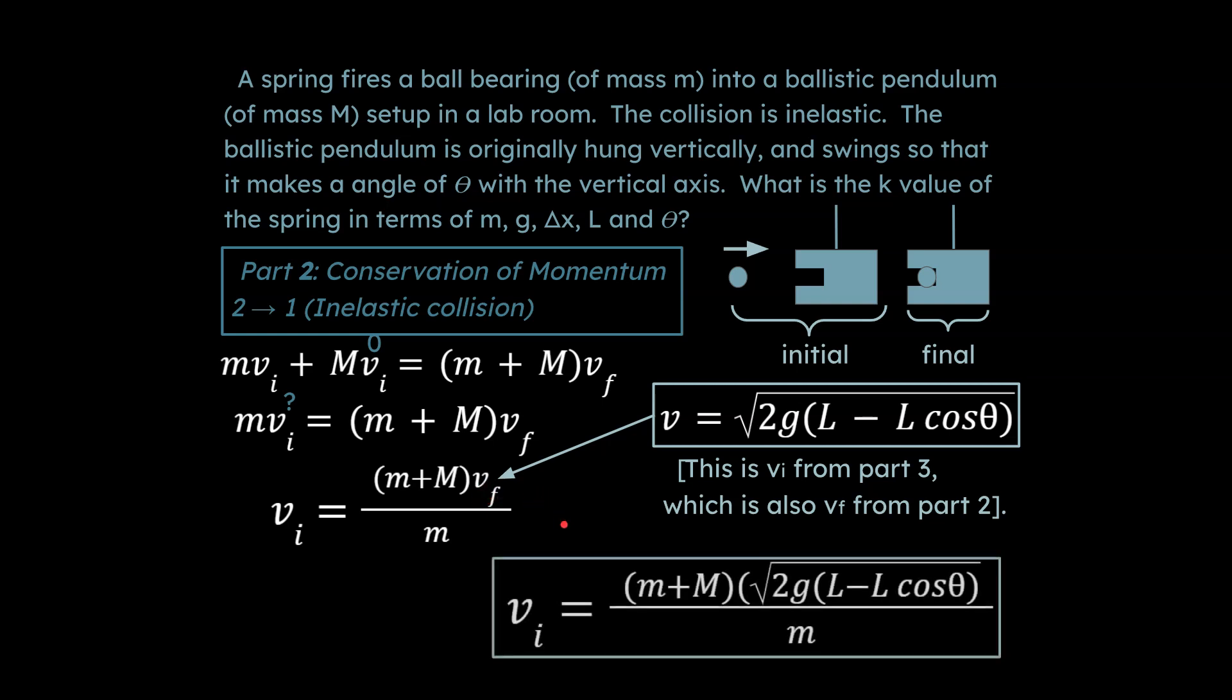So we can go ahead and sub that in and this is where the algebra becomes a bit cumbersome. On the AP exam itself, you would have like a just a number here, would make this a little less busy in terms of the algebra. But that's what the initial velocity is going to be for the ball. And so that's the beginning of part two. That's also the end of part one.